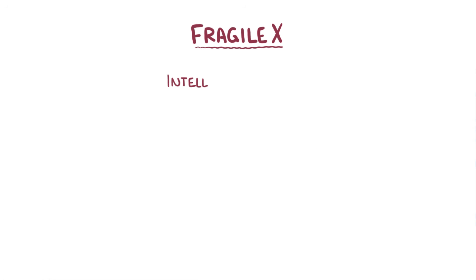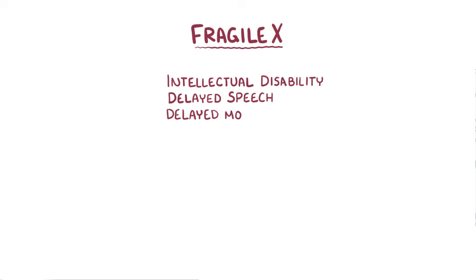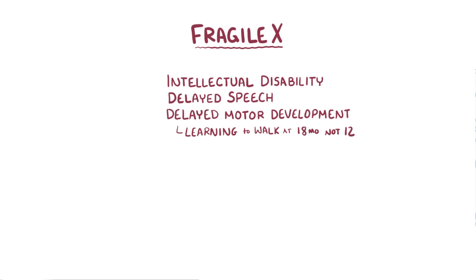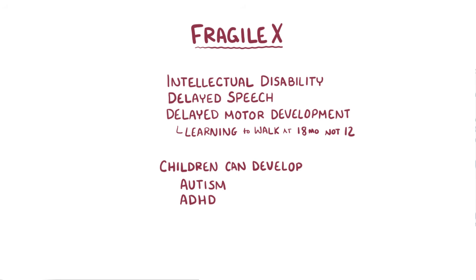Fragile X can cause intellectual disability, delayed speech, and delayed motor development, for example learning to walk at 18 months instead of 12. Many children with Fragile X also develop autism, ADHD, and seizure disorders.